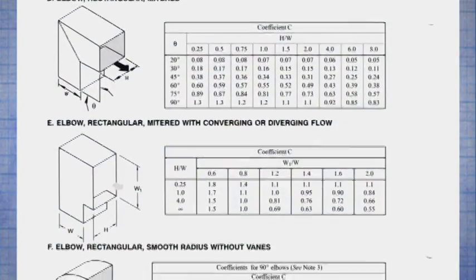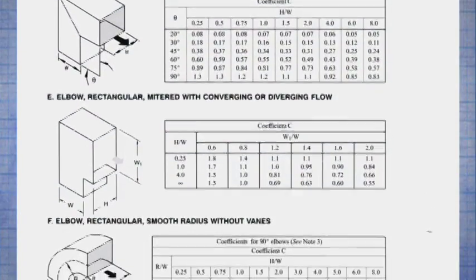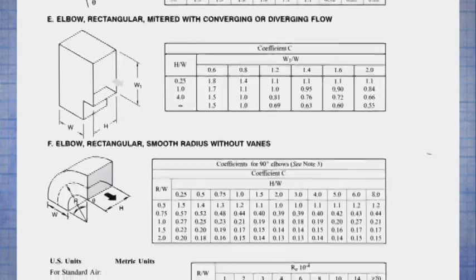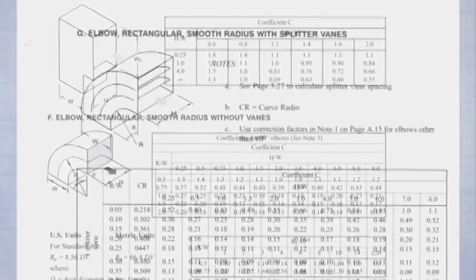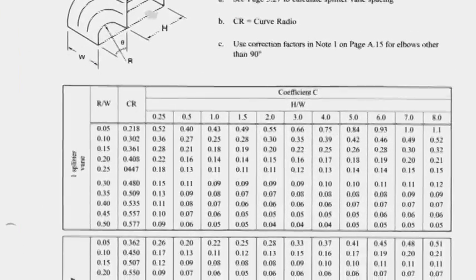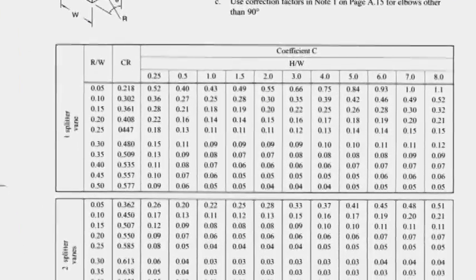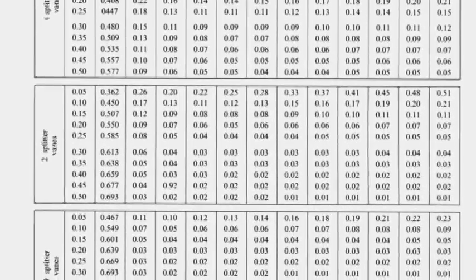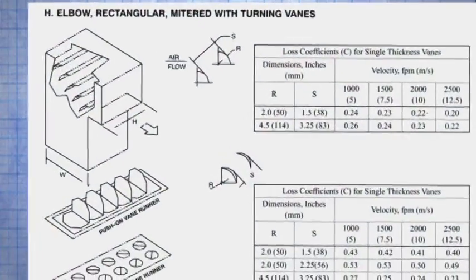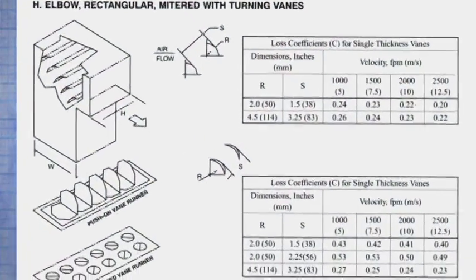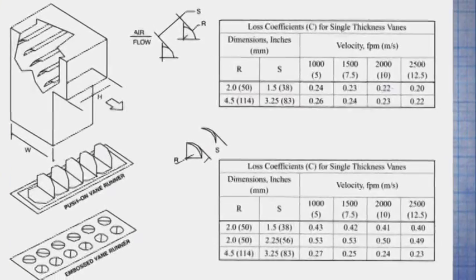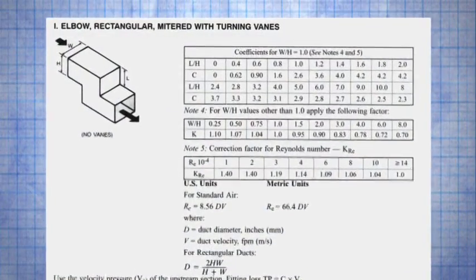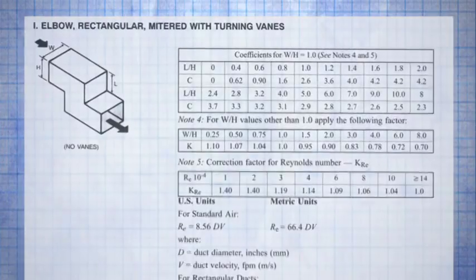These drawings illustrate the fitting types that will be demonstrated and discussed within this video presentation. The drawings were taken from the appendix of SMACNA's HVAC System Duct Design Manual. The data associated with each fitting provides loss coefficient values that can be used to develop the pressure loss contribution of each fitting.